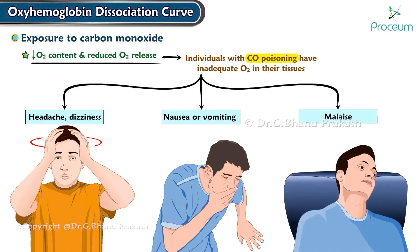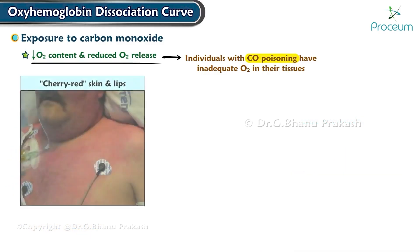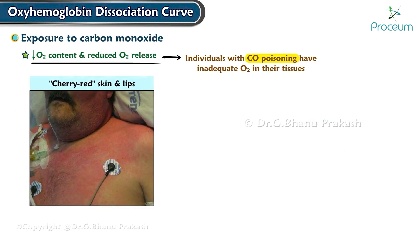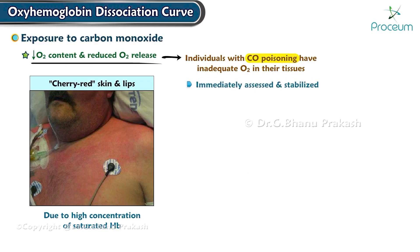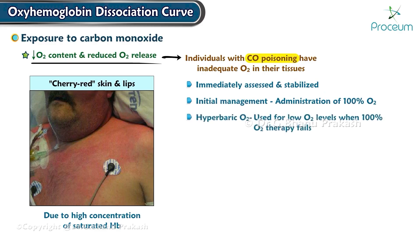Individuals may also be described as having cherry-red skin and lips due to a high concentration of saturated hemoglobin, which appears red. Individuals with carbon monoxide poisoning must be immediately assessed and stabilized. Initial management usually involves the administration of 100% oxygen therapy. Hyperbaric oxygen therapy, though controversial, is often used for individuals with very low oxygen levels when 100% oxygen therapy fails.